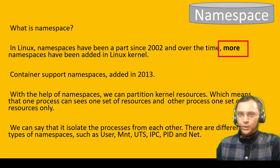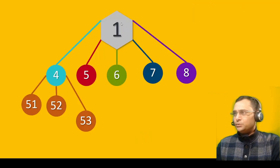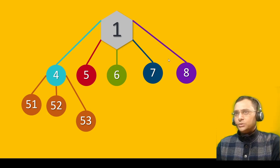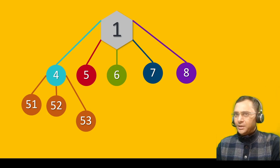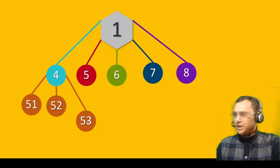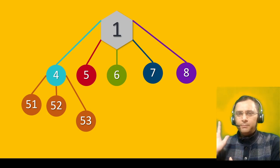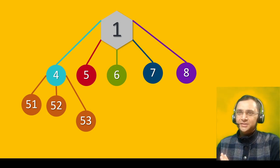There are different types of namespaces such as user, mnt, UTS, IPC, PID, and net. PID is for process ID, net is for networking. In every Linux kernel the first process ID is one. Let's suppose we have three containers running under processes 51, 52, and 53. One container's process cannot see another container's process. For container 51, it looks like only container 51 is running on the host. Same for 52 and 53 — each container sees itself as if it is the only one running and consuming all resources. From the namespace component we achieve privacy and security.